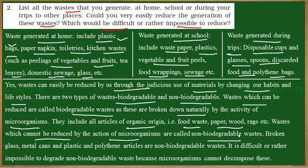Non-biodegradable waste remains in the same form in the environment for a longer duration. Examples include glass, metals, plastic, and polythene articles. When disposed into the environment, they are not converted into simpler forms. Biodegradable organic waste can be reduced — if collected separately, it can be converted into manure, which is a good source of nutrients for plants. But non-biodegradable waste is very difficult to reduce or eliminate because microorganisms have no role in breaking it down.